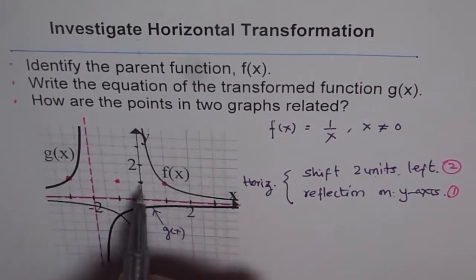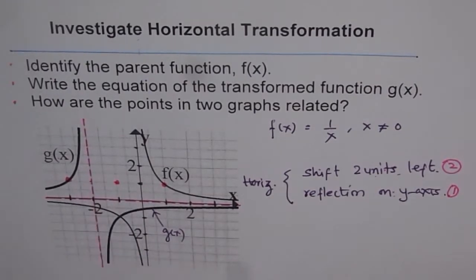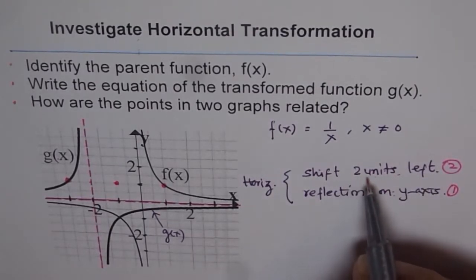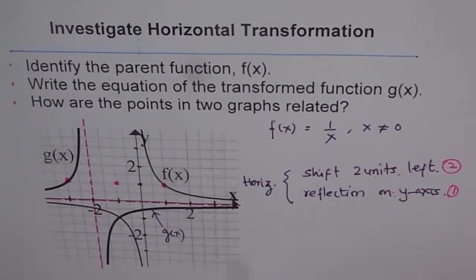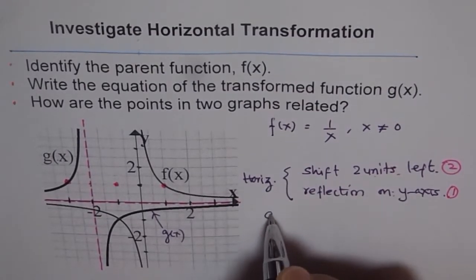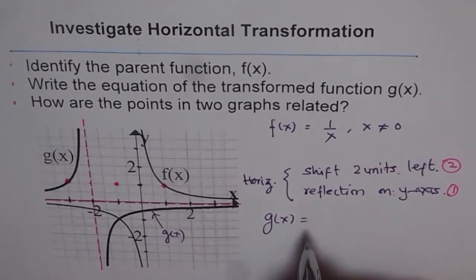And then I went two units left and I landed on g(x). That means the only translation here is two units left and there is no horizontal stretch or compression. And therefore I can now write down my equation.